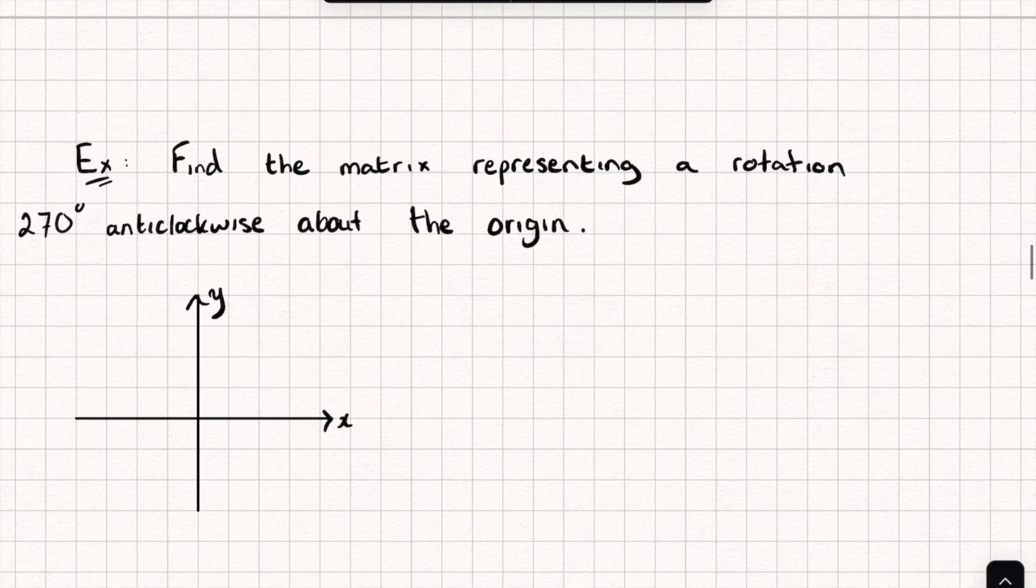Finally, let's look at the matrix representing a rotation of 270 degrees, and you can probably guess how we're going to do this. I'm going to mark on the point (1,0) and the point (0,1). So what happens to the point (1,0)?